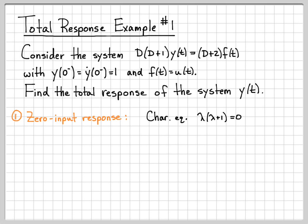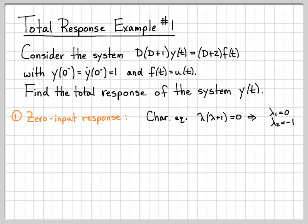We just need to analyze the characteristic equation of the system. By looking up here, I can figure out what that polynomial is — replace all the d's with lambdas. This is what we call the characteristic equation of the system, and solving for when it equals zero gives us the roots. By inspection, our roots are lambda 1 equals 0 and lambda 2 equals negative 1.